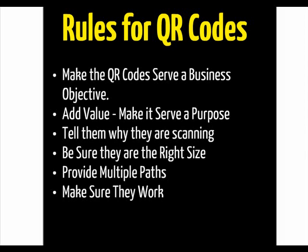You also want to provide multiple paths. The QR code is secondary — the primary goal is to get people to respond to your campaign in some way. Not everybody has a smartphone, nor do all people who have smartphones have a QR code reader. So it's important to include paths to get to your campaign. Add the website URL to printed materials. Web-based materials should have the QR code hyperlinked or near a shortened code that they can either type in or click.